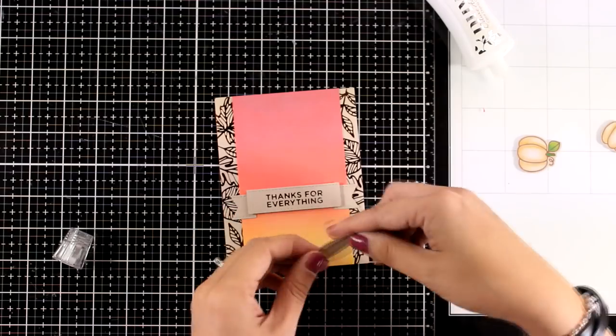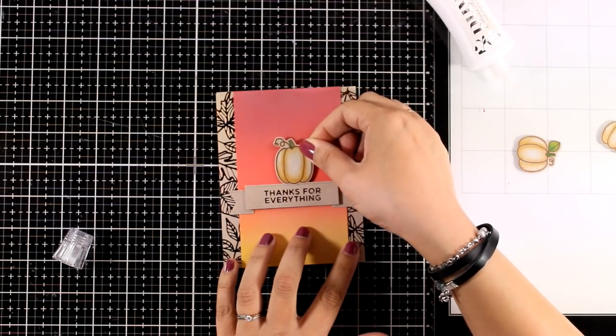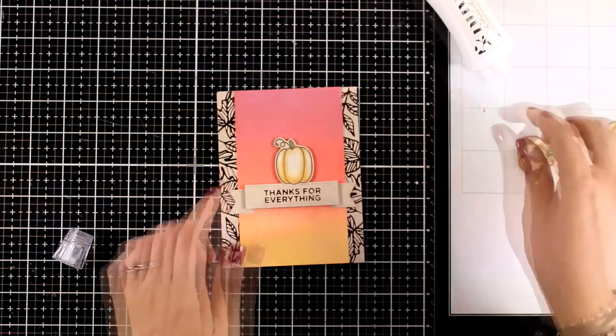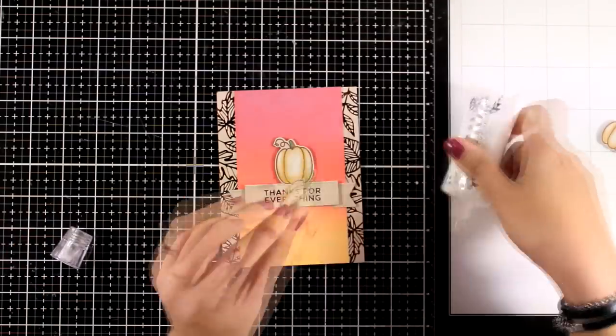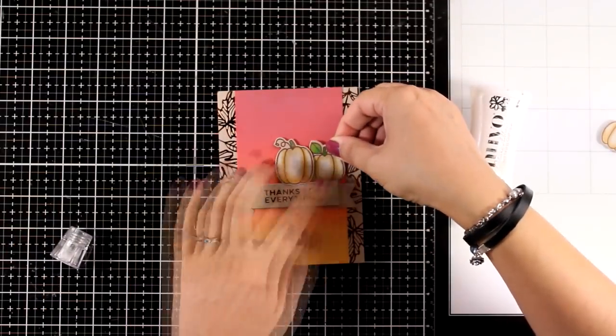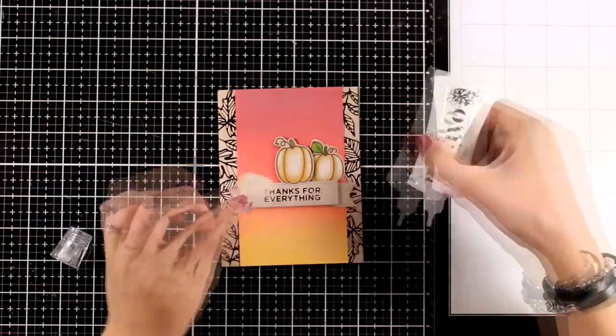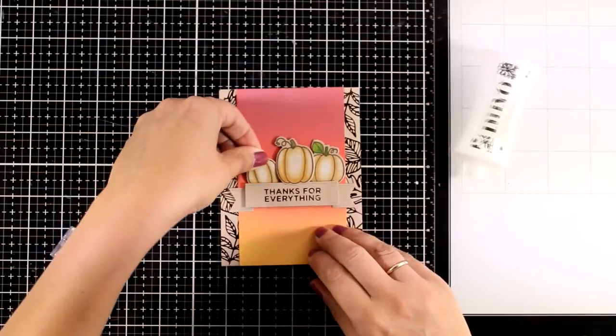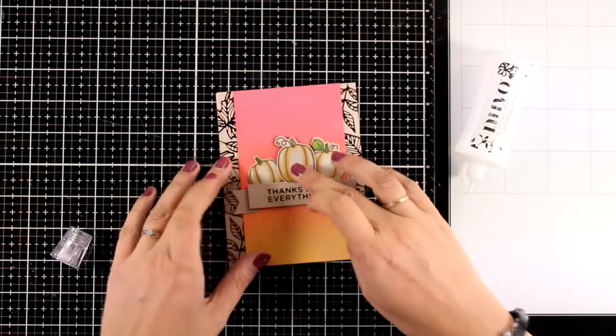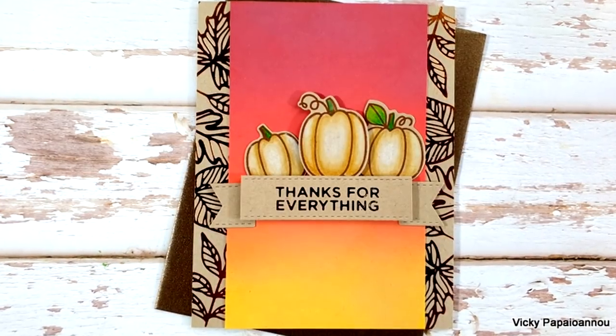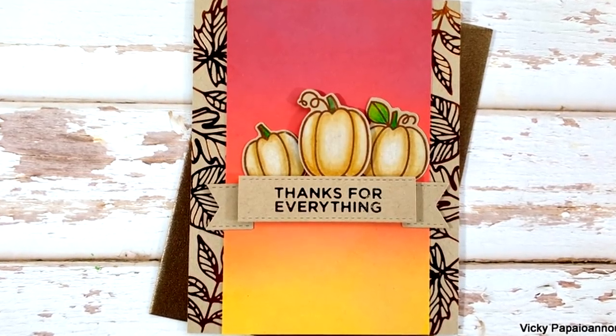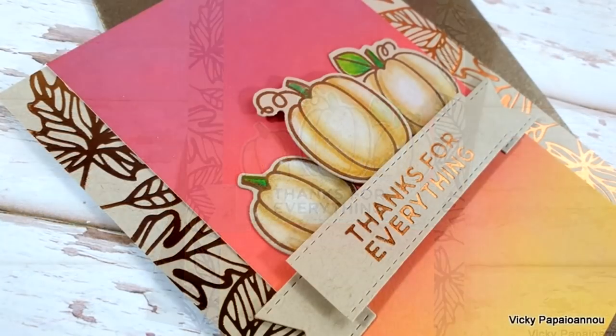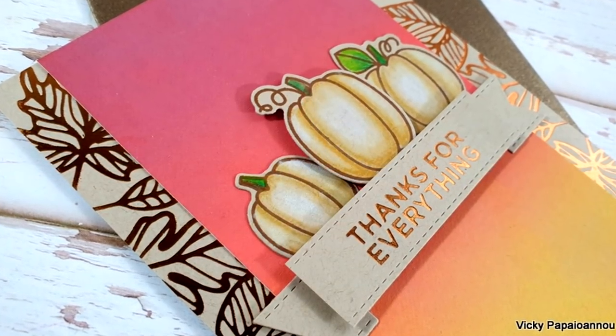For the sentiment I went with a foiled plate that I had in my stash from previous kits and that says Thanks For Everything. I think this would make the perfect Thanksgiving card. But remember in this foil kit for this month you will get a sentiment that says Hello Pumpkin which would go great with this design as well. So I'm going to stick the pumpkins on top and this is going to finish off my card. You can see here some close-up photos and hopefully you will be able to see the shine on the sentiment as well as on the borders.